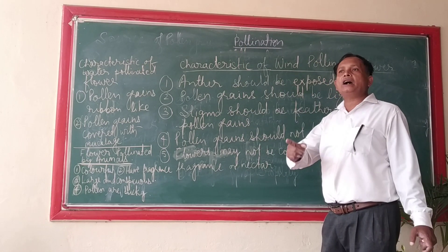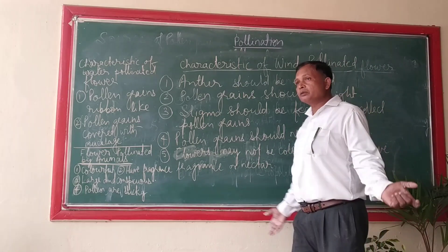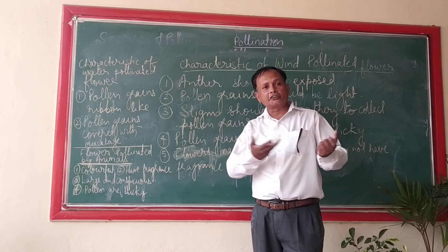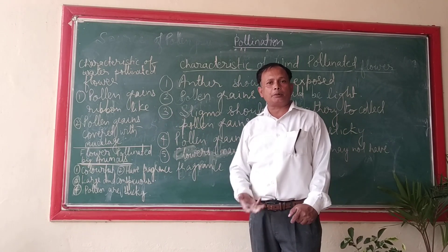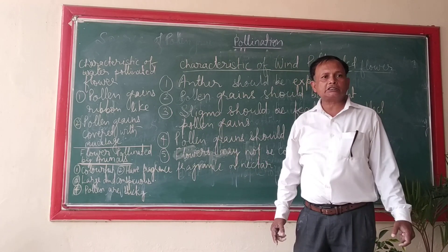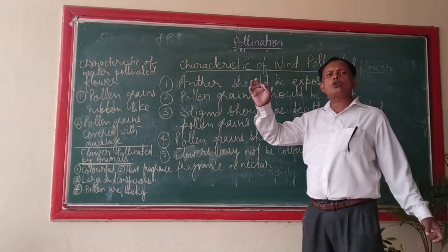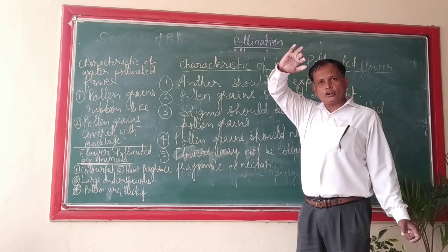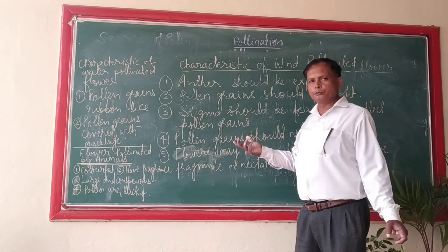The third characteristic: the stigma should be feathery. If the stigma is feathery, whatever pollen grains are flowing above it, it may collect them with the help of its feathery surface. So, the stigma should be feathery to collect more and more pollen grains flowing along with the blowing wind.